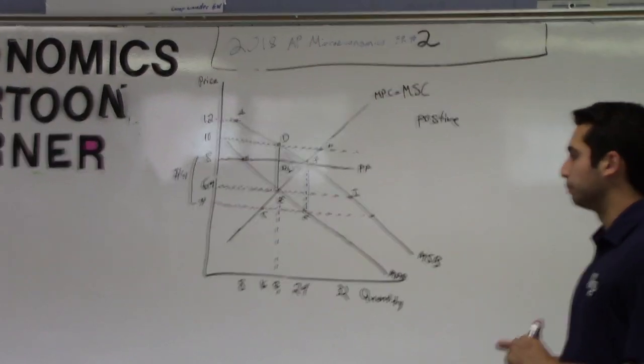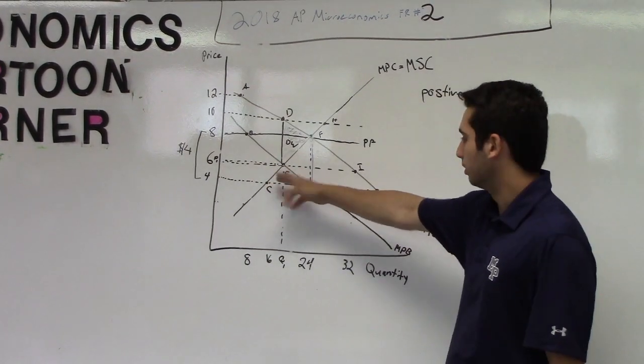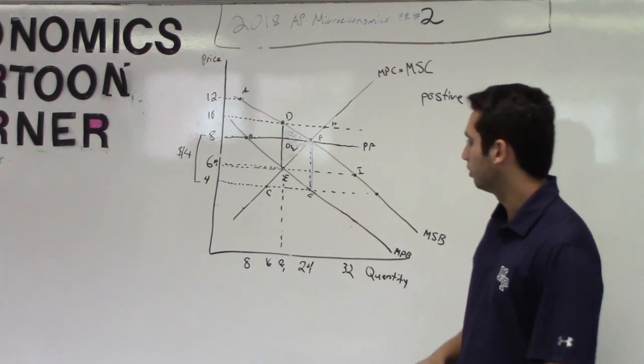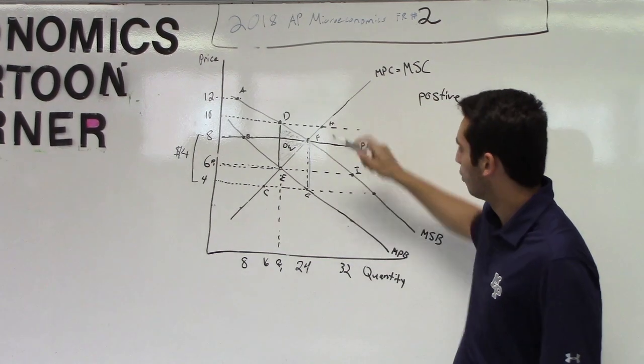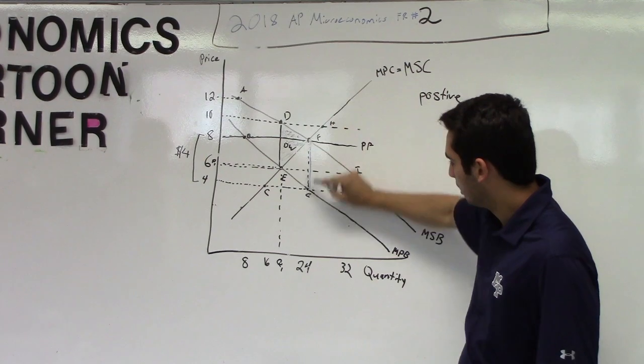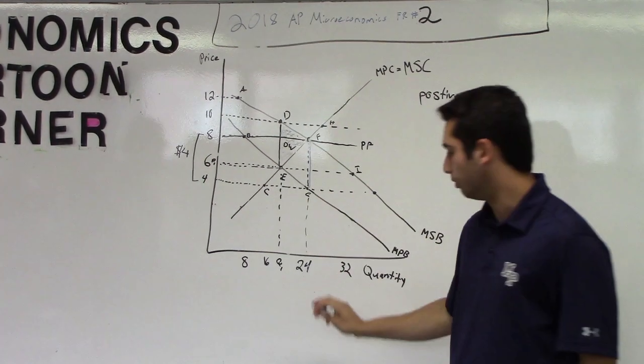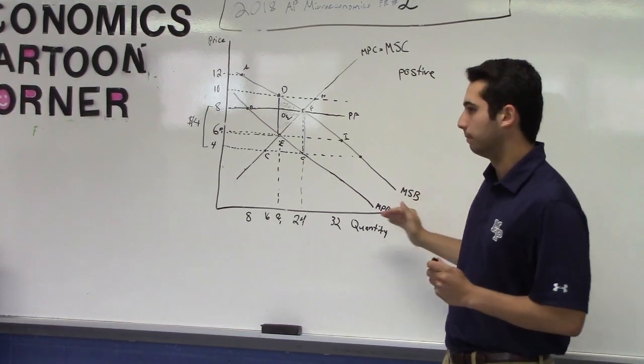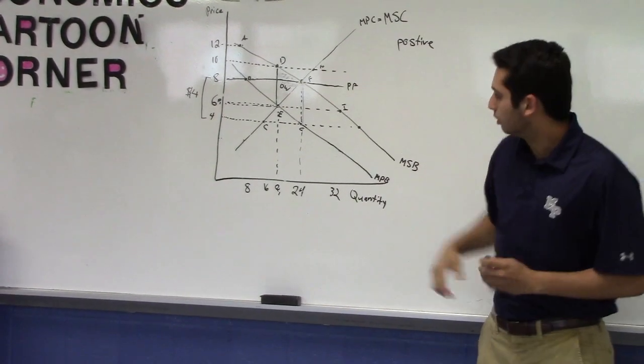So when the government imposes a price floor at $8, rather than the market equilibrium producing at $6 at 16 units, when they produce at $8, you can see that they want to produce at point F. And when they produce at point F, that goes down to 24 units of output, which would achieve the marginal social benefit. Point F is on this curve.